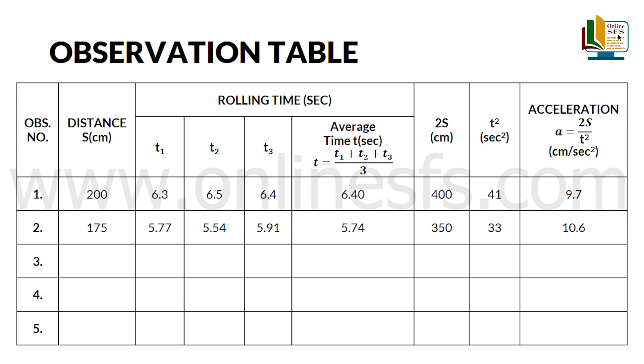We will also find 2s, t square and acceleration a and note down in the table. Similarly, we will find the mean time and acceleration for 150 cm, 125 cm and 100 cm distances. These are the readings for the rest of the distances.